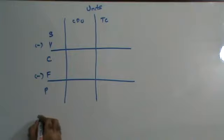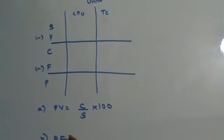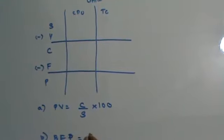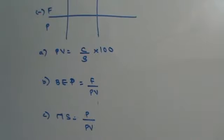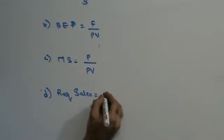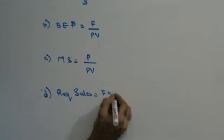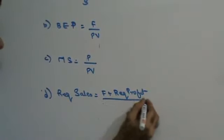Let us see the formulas. PV is C upon S into 100. VEP is F upon PV. MS is P upon PV. Required Sales is F plus Required Profit upon PV.